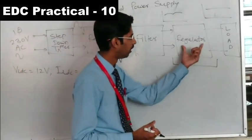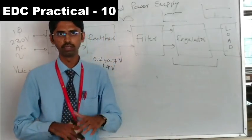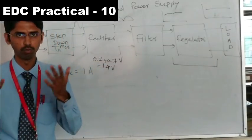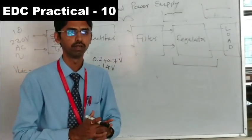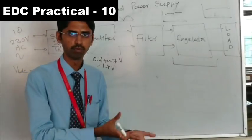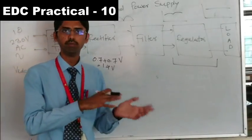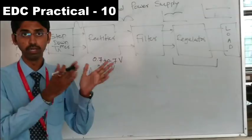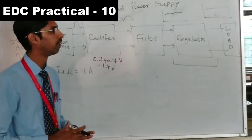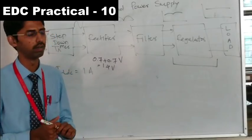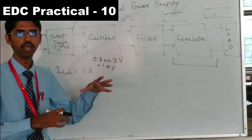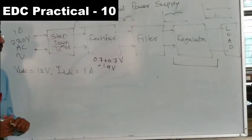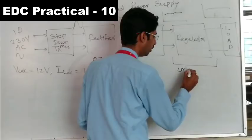For the regulator, there are two types: component-based regulators like Zener diode circuits, or IC-based regulators. IC-based regulators can be fixed type, like the 7805 (+5V) or 7905 (−5V), or variable type like the LM317, which is a variable positive voltage regulator allowing output DC voltage to be varied over a range. There is also LM337, which is a negative variable voltage regulator.